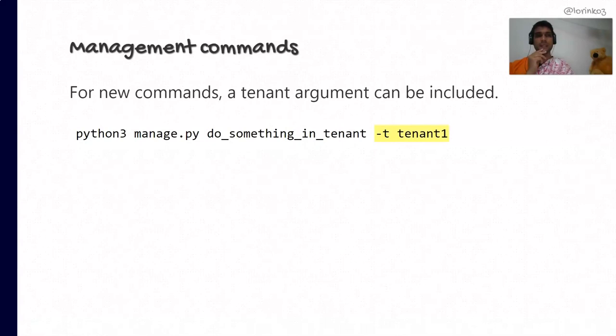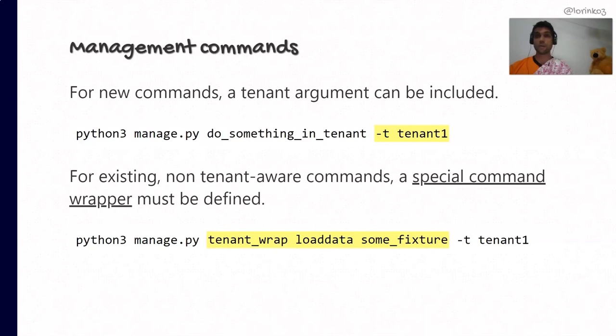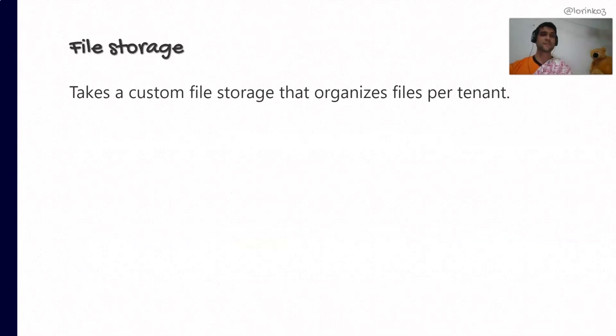Let's begin with management commands. In many situations it's extremely valuable to run a management command within the scope of an active tenant. For new commands, a tenant argument can be included so the command first activates the tenant and then runs the operation within that tenant's context. For existing non-tenant-aware commands — including all commands that come with Django or third-party apps — a special command wrapper is required. The wrapper takes a tenant argument and an inner command, activates the tenant, then relays control to the inner command.